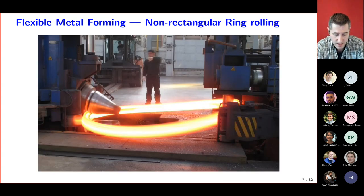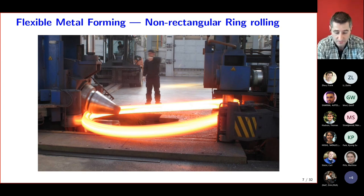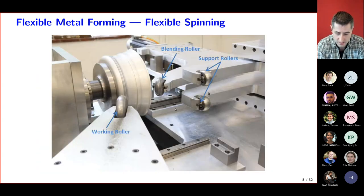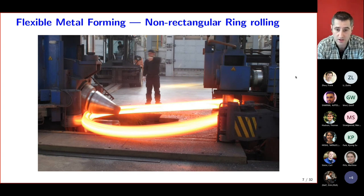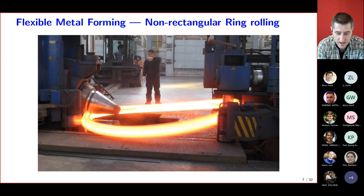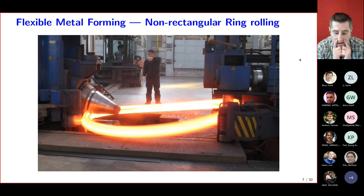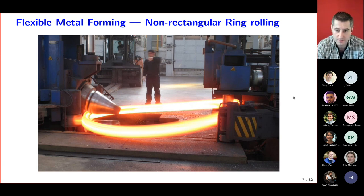Here is an example of an attempted flexible ring rolling. Classic ring rolling allows you to roll a rectangular cross-sectioned ring, and here the aim is to get a non-rectangular cross-section. It's not really flexible because they've had to machine the rollers to achieve the particular shape. Even so, they hit some instability and the entire ring bent out of the plane. They did another attempt, got a ring with a non-rectangular cross-section, published a paper and claimed success — though you couldn't plug in the cross-section you wanted and get it out.